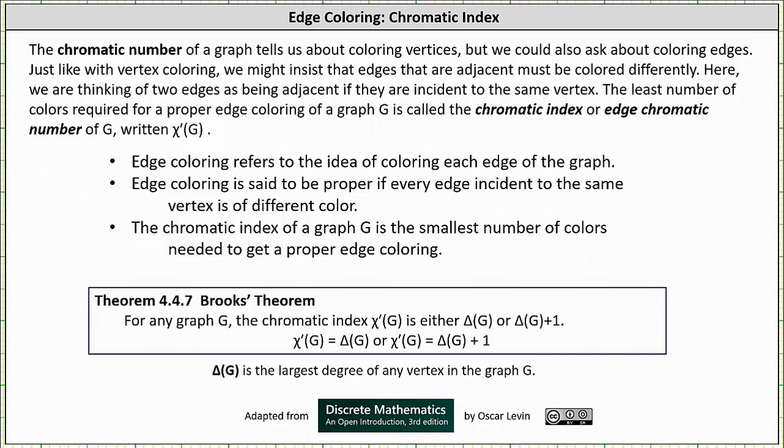Edge coloring refers to the idea of coloring each edge of the graph. Edge coloring is said to be proper if every edge incident to the same vertex is a different color, or we often just say an edge coloring is proper if every adjacent edge is of different color. The chromatic index of G is the smallest number of colors needed to get a proper edge coloring.